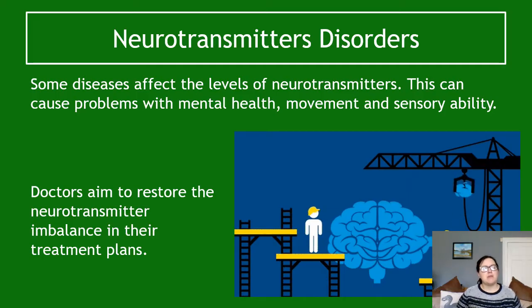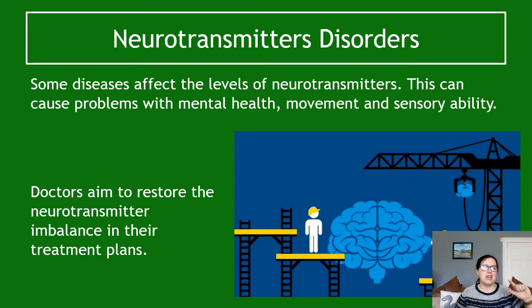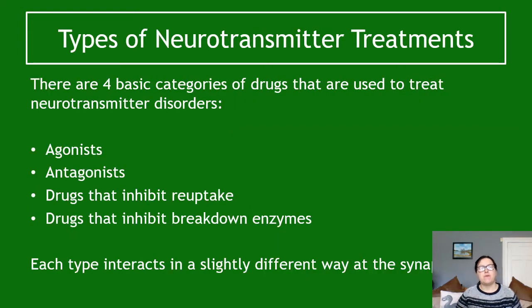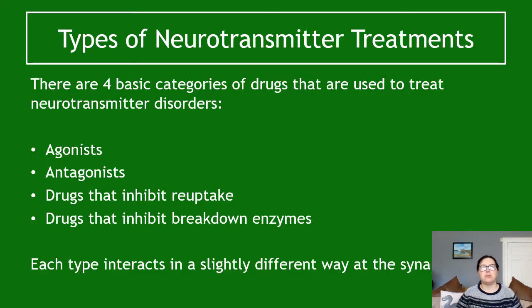When thinking about fixing a neurotransmitter disorder, the questions are: can I replace this neurotransmitter? Can I stop it getting broken down — basically keep that neurotransmitter around a bit longer? Or do I need to get rid of it because it's causing the problem? There are four basic categories of drugs: agonists, antagonists, drugs that inhibit reuptake, and drugs that inhibit breakdown enzymes.